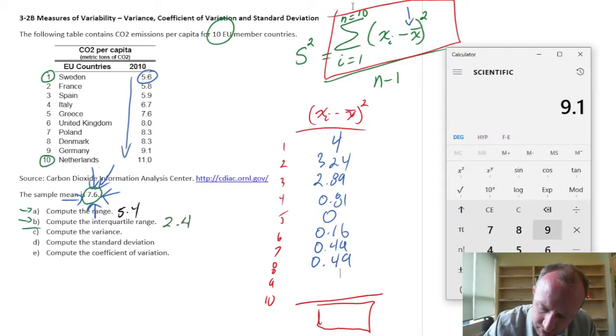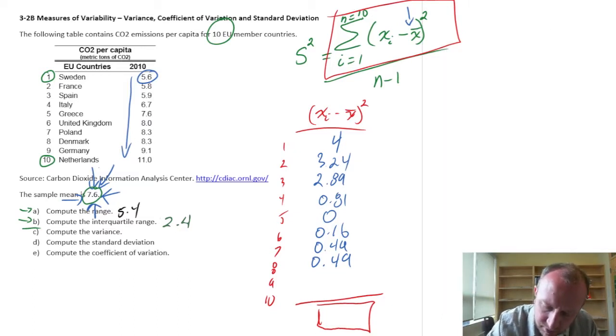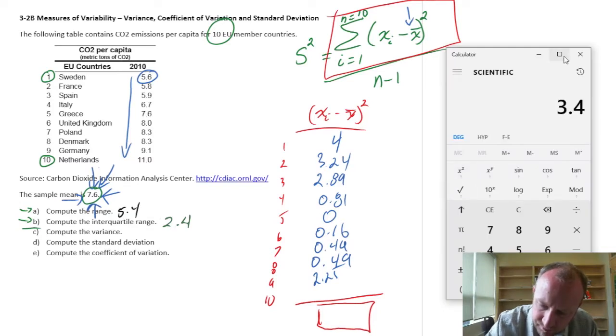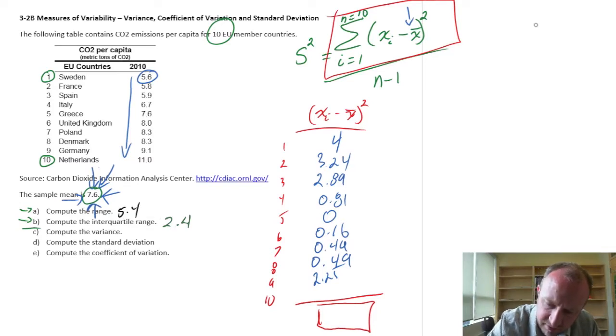Germany, 9.1, 2.25, and finally Greece, or Netherlands, 11 minus 7.6, 11.56. Okay, so what we've got here now are all of these squared differences.